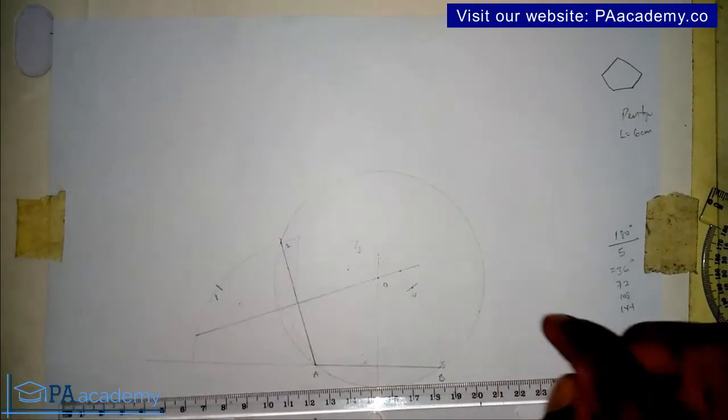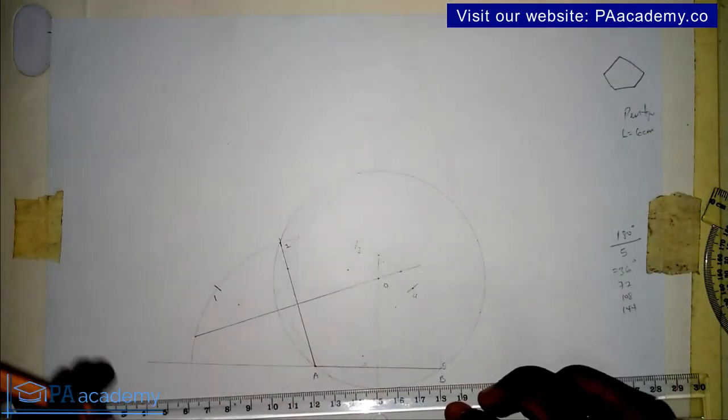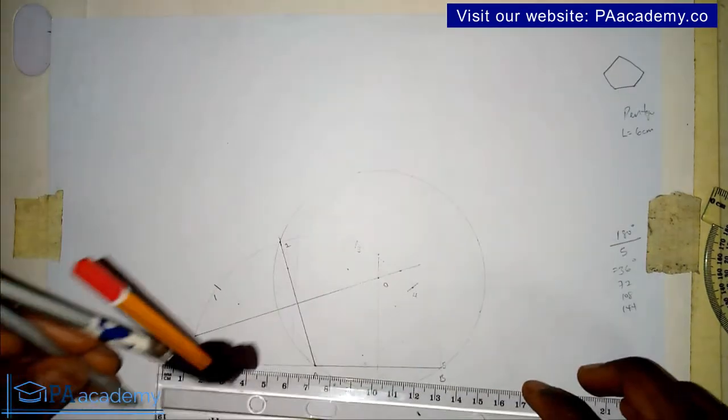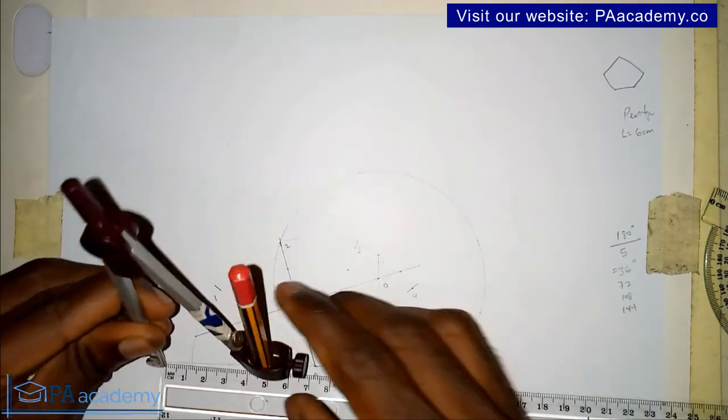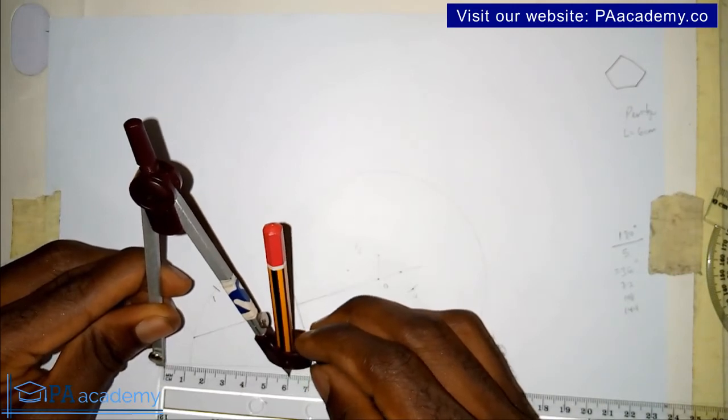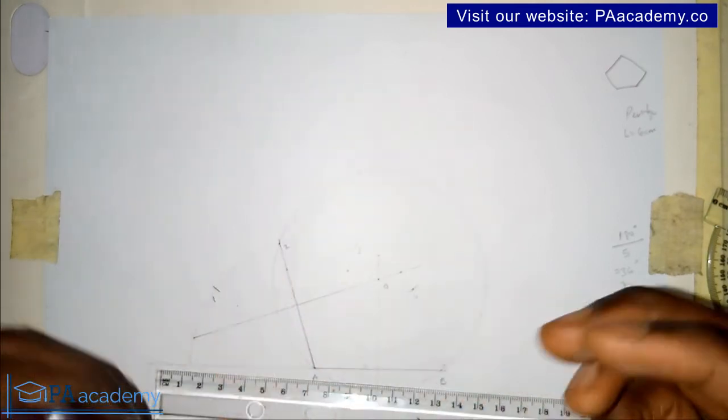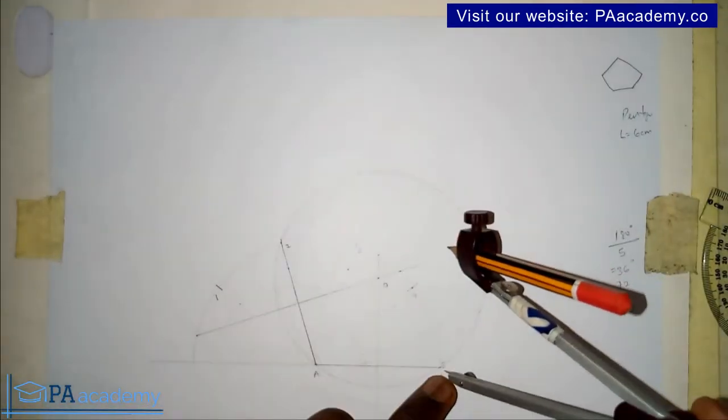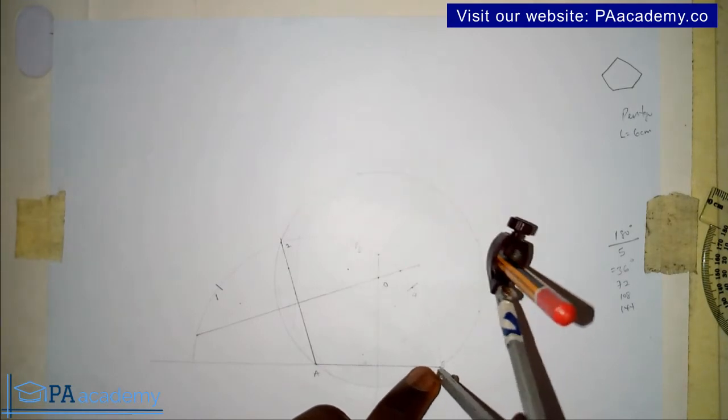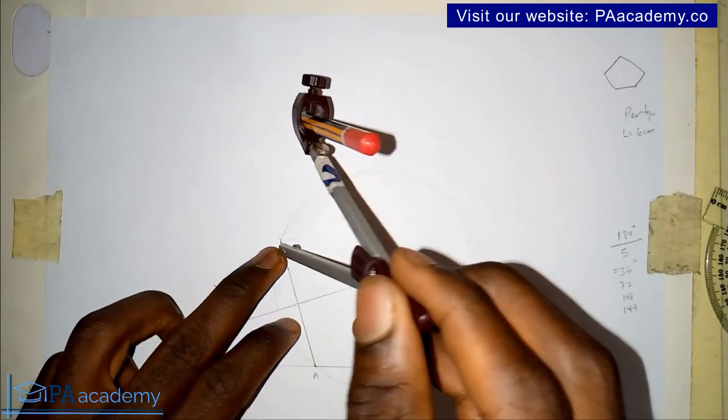The polygon will now be within this circle. Now next is to pick your compass and measure the length of the side that we are using, that's six centimeters. So let me measure my compass back to six centimeters. Now from point B, I'll bisect the circle. I can also do the same thing from this point too.